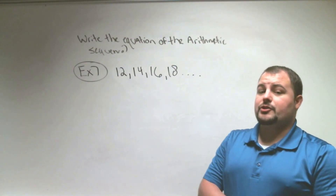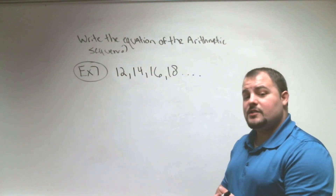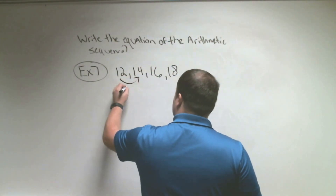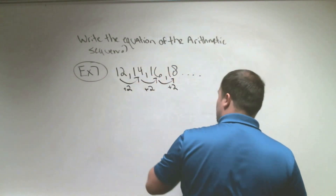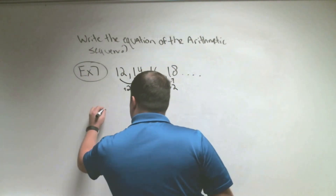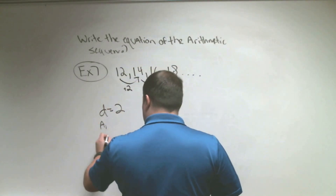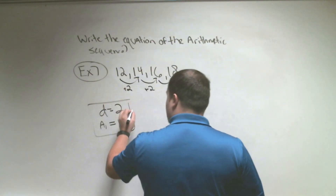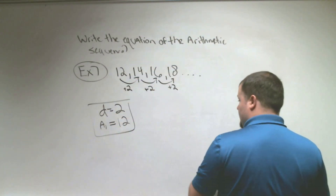For our final example, we write the equation for another arithmetic sequence. The pattern is plus 2: from 12 to 14, adding 2; 14 to 16, adding 2; 16 to 18, adding 2. It's definitely arithmetic because we're always adding the same number. Our common difference D is 2. The first number A1 is 12. These are the two numbers we need.